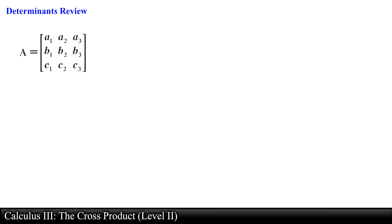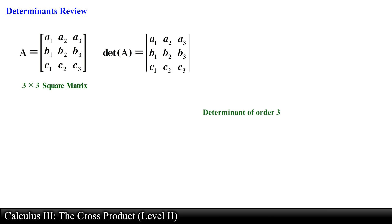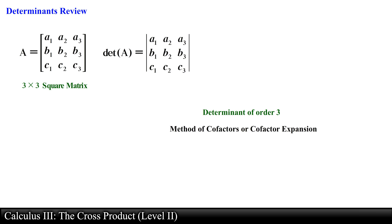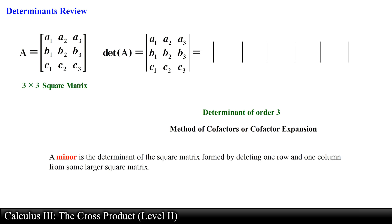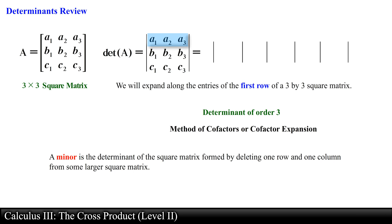Now to find the determinant of a 3 by 3 matrix, or a determinant of order 3, we need to break apart the 3 by 3 square matrix into 3 separate 2 by 2 square matrices. This can be accomplished by using the method of cofactors or cofactor expansion. We first need to find 3 minors of the 3 by 3 matrix. A minor is the determinant of the square matrix formed by deleting one row and one column from some larger square matrix. For our purpose we will expand along the entries of the first row of a 3 by 3 square matrix, but you are free to choose which row or column you want to expand from.